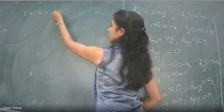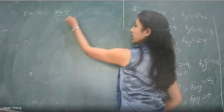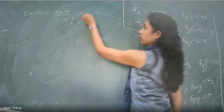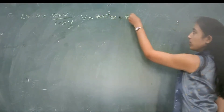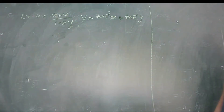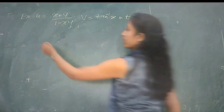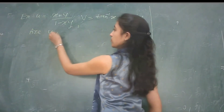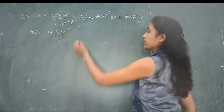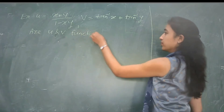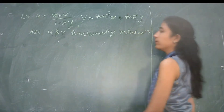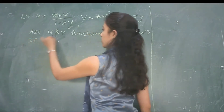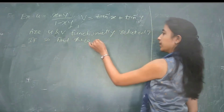Given u equals (x plus y) divided by (1 minus xy), and v equals tan inverse of y. The question asks: are u and v functionally related? If so, find their relationship.